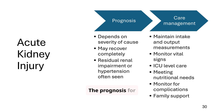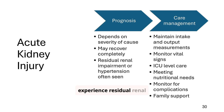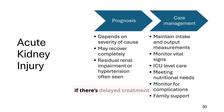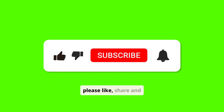The prognosis for acute kidney injury depends on the severity of the underlying cause. While complete recovery is possible, some patients may experience residual renal impairment or hypertension. Most kids bounce back if it's caught early. But if there's delayed treatment or underlying illness, there could be permanent kidney damage or future risk of hypertension. Regular follow-ups are key. Thank you for watching — please like, share, and subscribe for more videos like this.